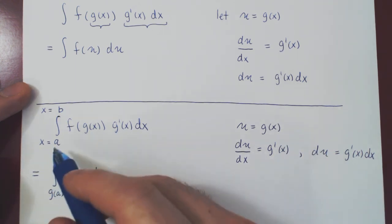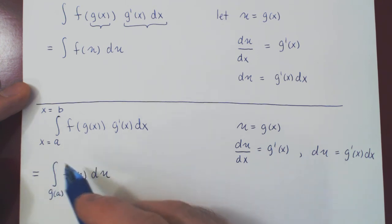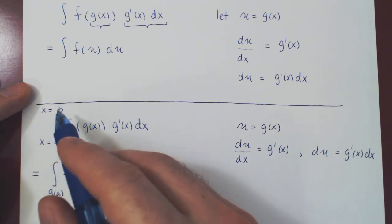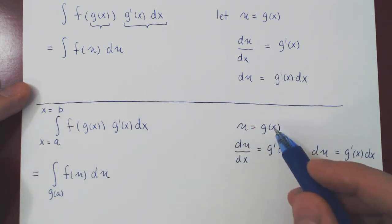And of course the same goes for the new upper bound of integration. This has to be u equals something. Well, if x is b and u is g of x for any x, u will be g of b.